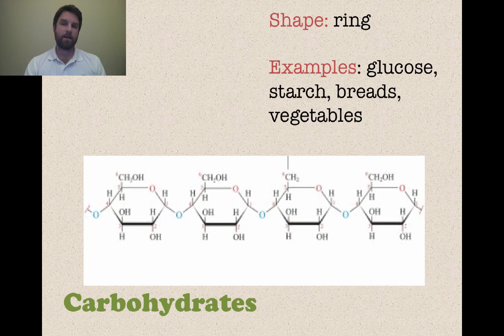So what shape are they in? These are a ring structure. And you can see that little hexagon looking sort of ring. It doesn't have to be a round ring necessarily, but we call these ring structures in chemistry. And the examples are glucose, which is your standard sugar that you think of. Starch, breads, vegetables. So please just be able to identify these if I showed you a picture of them.